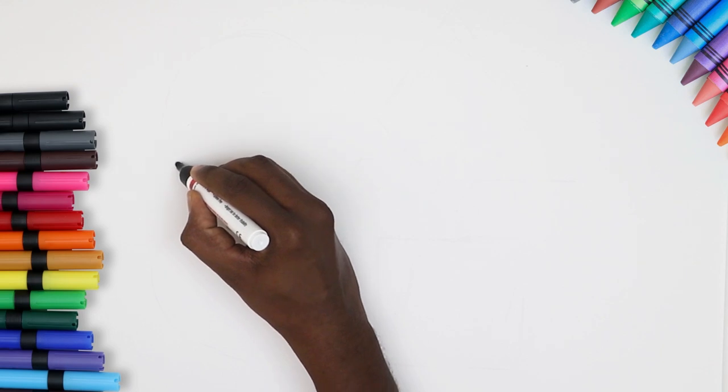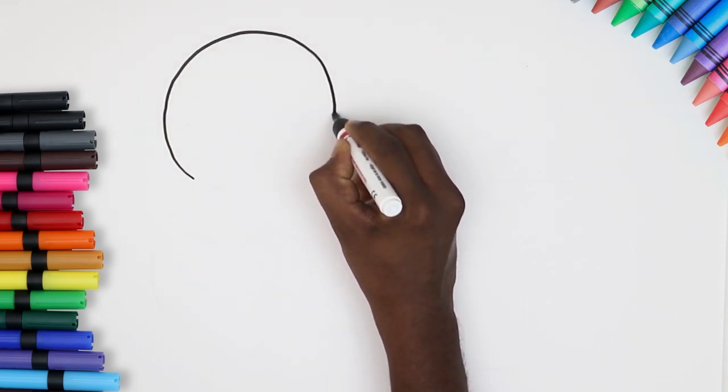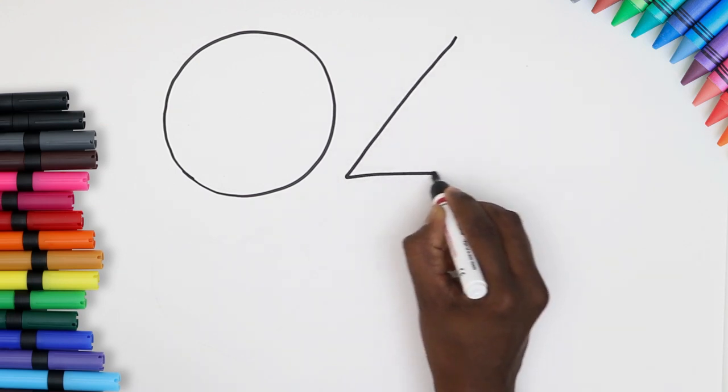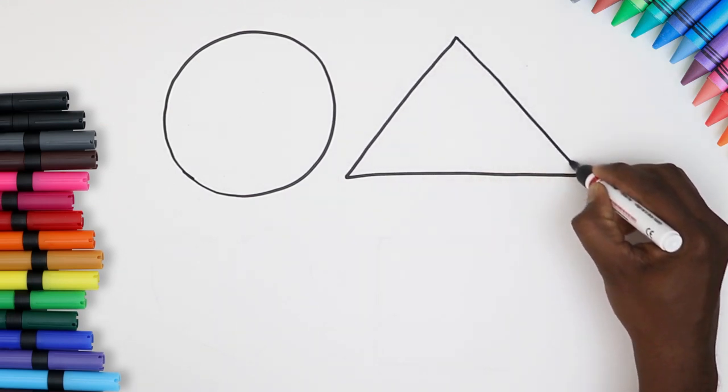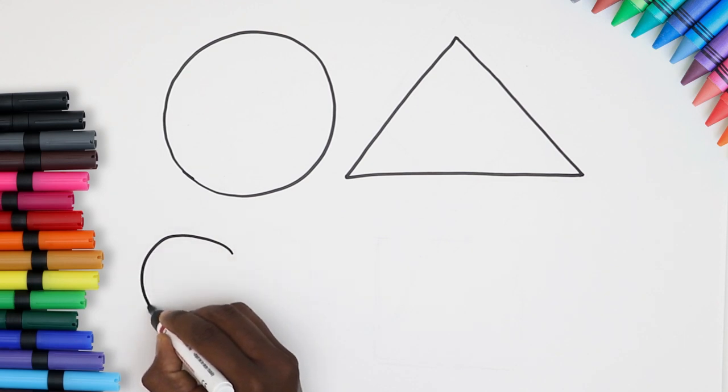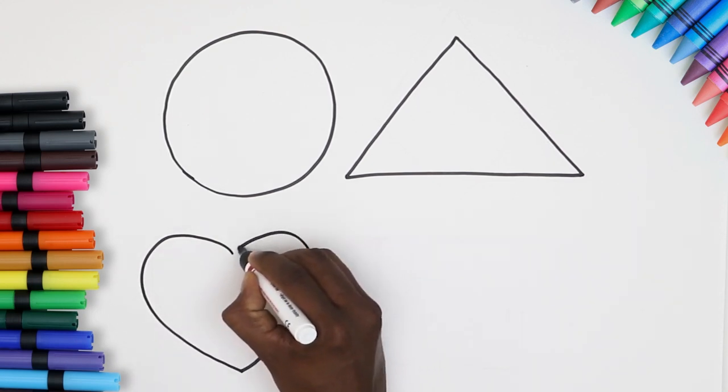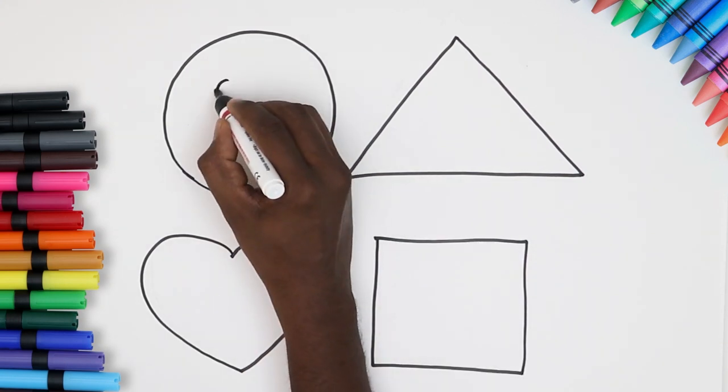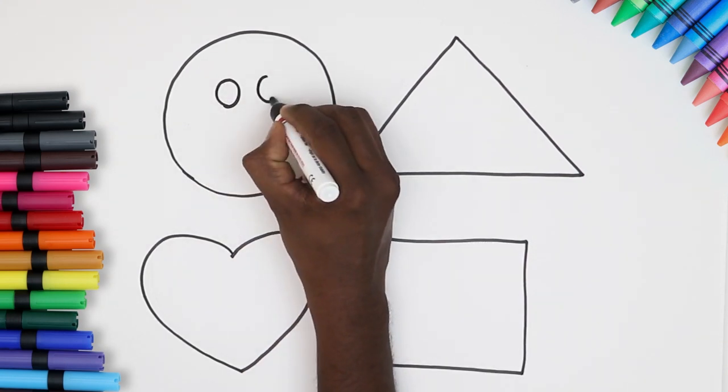Hi kids! Are you ready to draw some shapes? Let's begin. Draw a circle and then a triangle. Yes! Great! Can you guess the next one? It's a heart. And the last one, a square. Wasn't it easy? It's time to give our shapes happy faces.